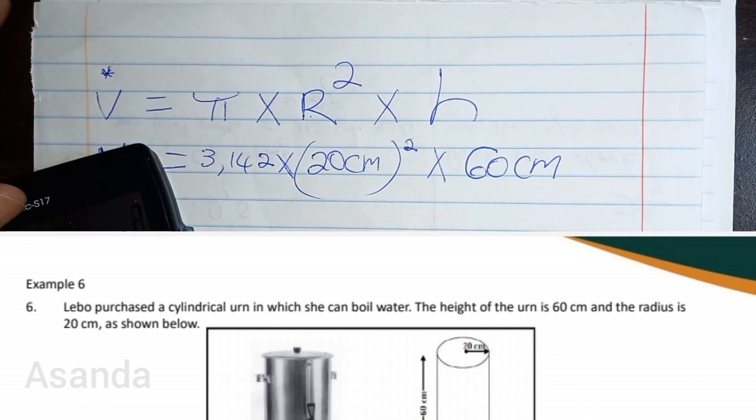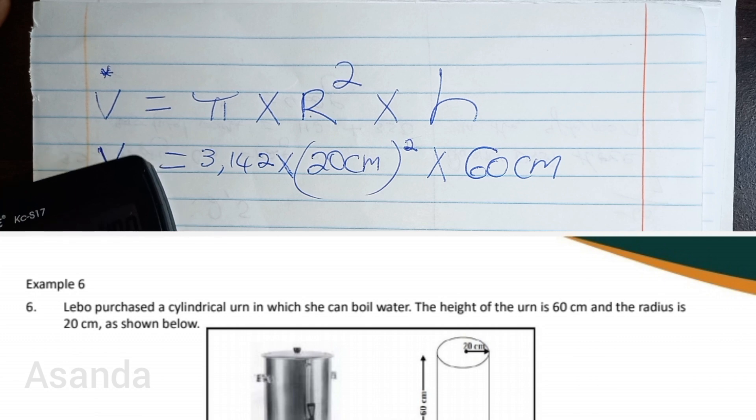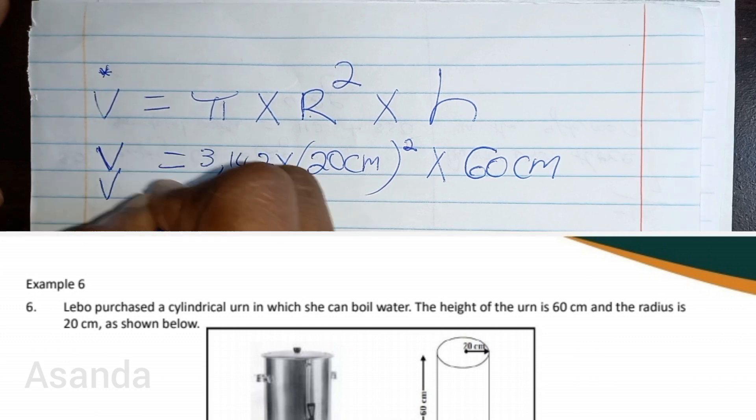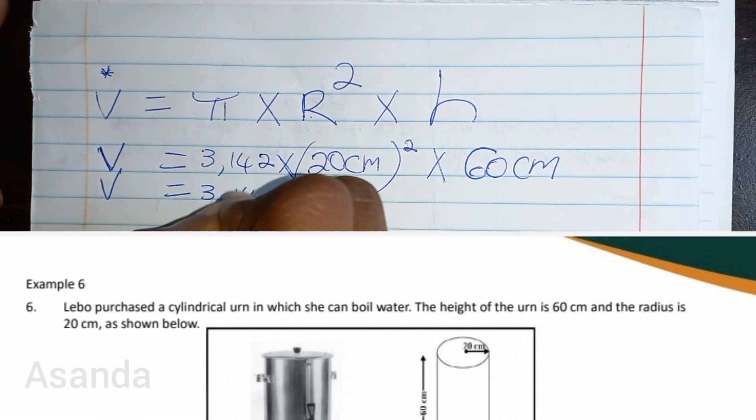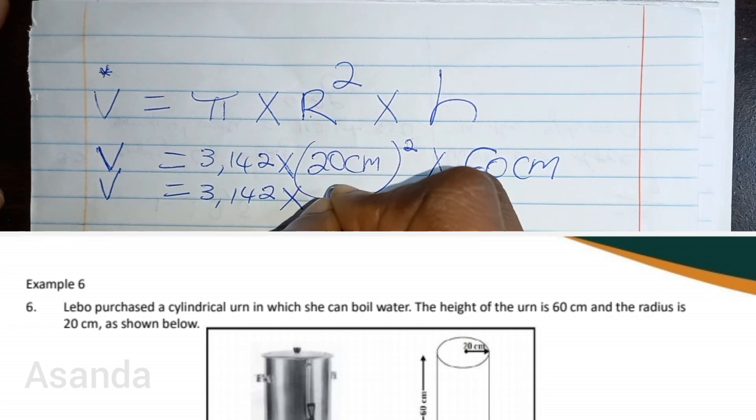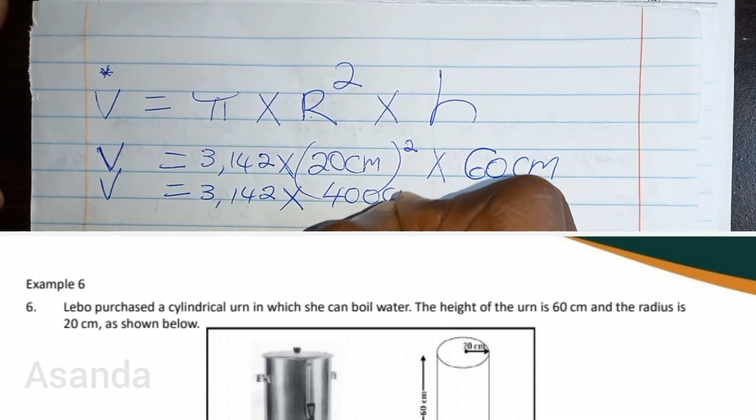20 squared—I'm going to do that part first. So my volume equals 3.142 multiplied by 400 centimeters squared, multiplied by 60 centimeters.